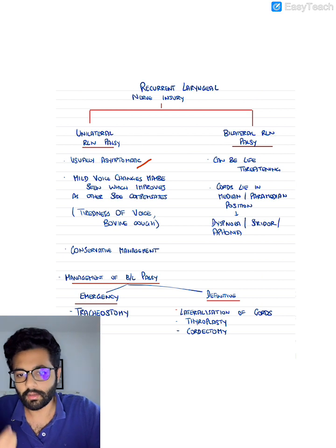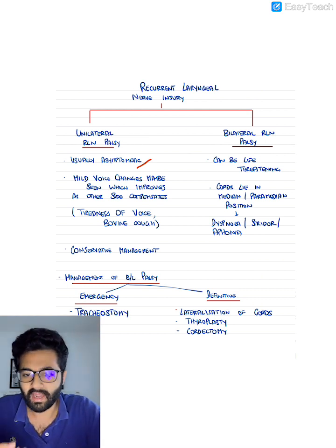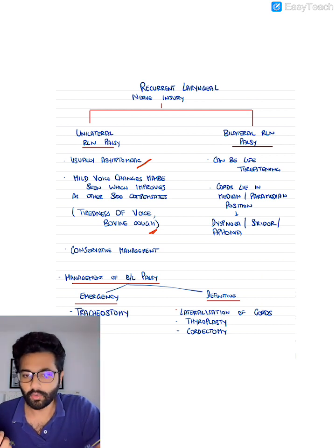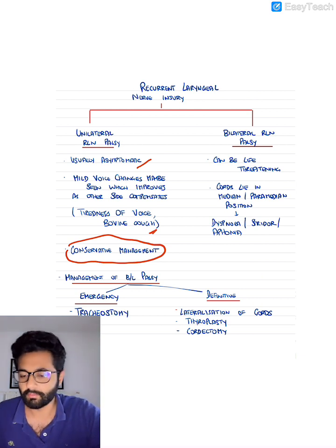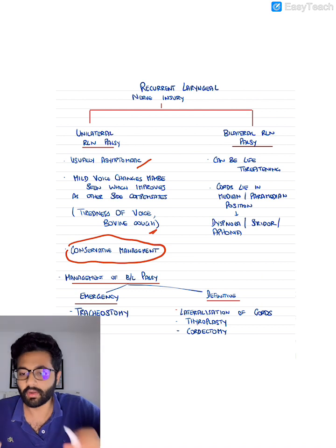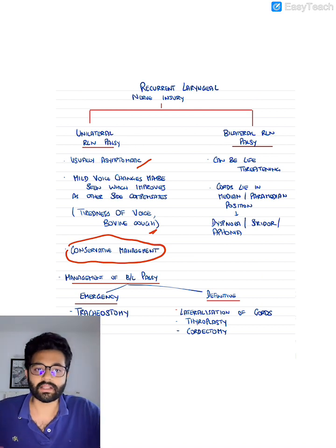Sometimes it's described as tiredness of voice and very rarely it could be associated with a kind of dry cough called bovine cough. Usually unilateral RLN palsy is conservatively managed. If there's no improvement in a few weeks, you can also send them for speech therapy. But generally unilateral is not too dangerous and it's conservatively managed.